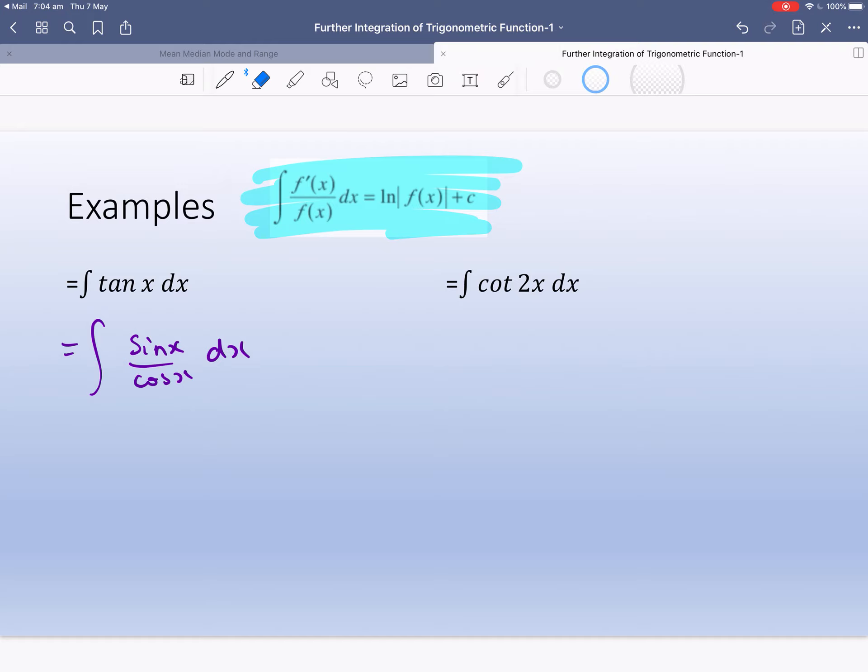Now the thing that I highlighted comes true. If we've got the derivative at the top of the function at the bottom, so let's look at if that works for us. What's the derivative of cos x? It's actually negative sine x. So at the top we need to have negative sine x. So I'm going to put a negative in front of it, and to compensate, I'm going to put a negative out the front. And now I can just use this guy. So it's going to be minus log of cos x plus c. So it's as simple as that.